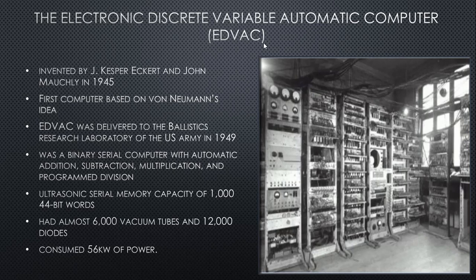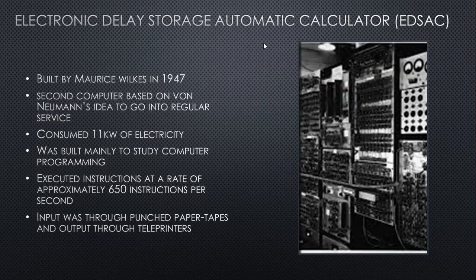The Electronic Delay Storage Automatic Calculator — EDSAC — was built by Maurice Wilkes in 1947, and is considered the second computer based on von Neumann's idea to go into regular service. It consumed 11 kilowatts of electricity and was built mainly to study computer programming. It executed instructions at the rate of approximately 650 instructions per second. Input was through punched paper tapes and output through teleprinters.